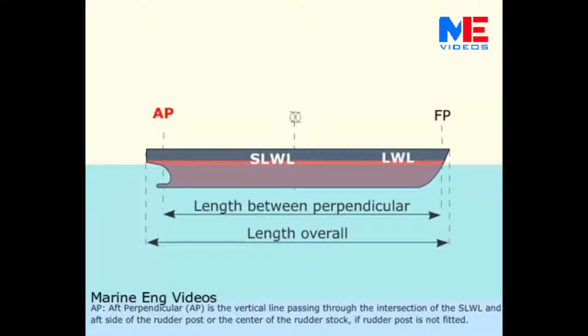AP, Aft Perpendicular. AP is the vertical line passing through the intersection of the SLWL and aft side of the rudder post, or the center of the rudder stalk if rudder post is not fitted.